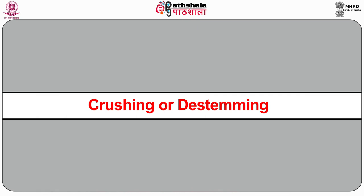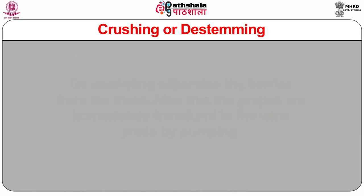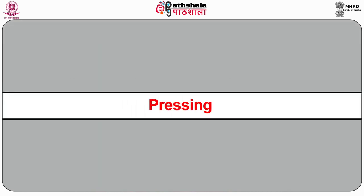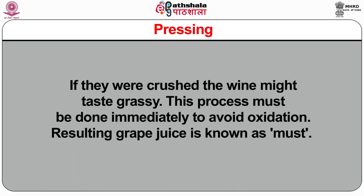The second step is crushing or de-stemming. Crushing is done to break the berries without crushing the seeds. De-stemming separates the berries from the stem. After this, the grapes are immediately transferred to the wine press by pumping. During pressing, all the juice is extracted from the grapes, resulting in a clear juice without crushing the seeds — if seeds were crushed, the wines might taste grassy. This process must be done immediately to avoid oxidation. The resulting grape juice is known as must. The French Vaslin press, Willmes or pneumatic press, or continuous hydraulic and Archimedes presses are used for pressing.